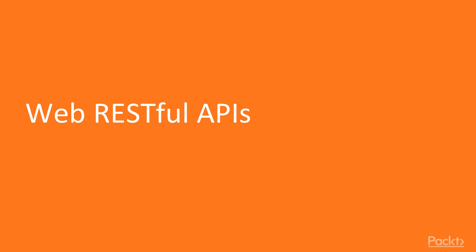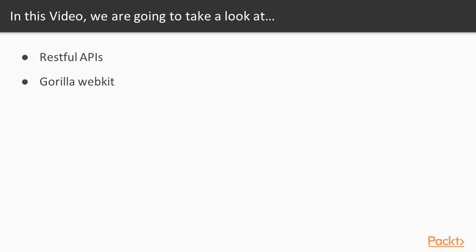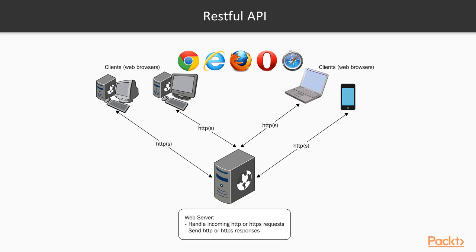In this video, we will learn how to use the Gorilla package to create powerful web RESTful APIs. We will start by covering the definition of RESTful APIs, then we will take a journey into the Gorilla toolkit. So what are RESTful APIs? RESTful APIs is the idea of using web technologies to exchange messages between a client and a server. Similarly to web applications, RESTful APIs use the HTTP protocol to communicate.